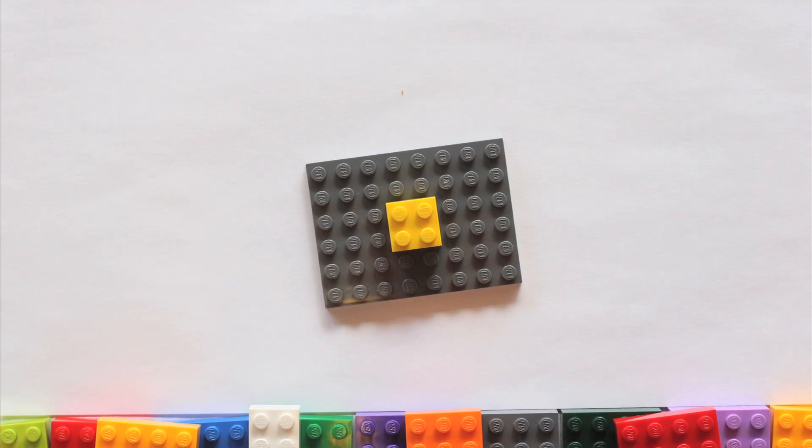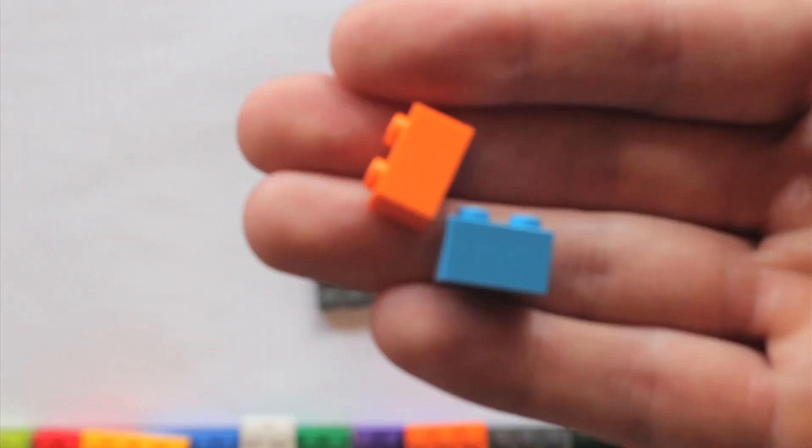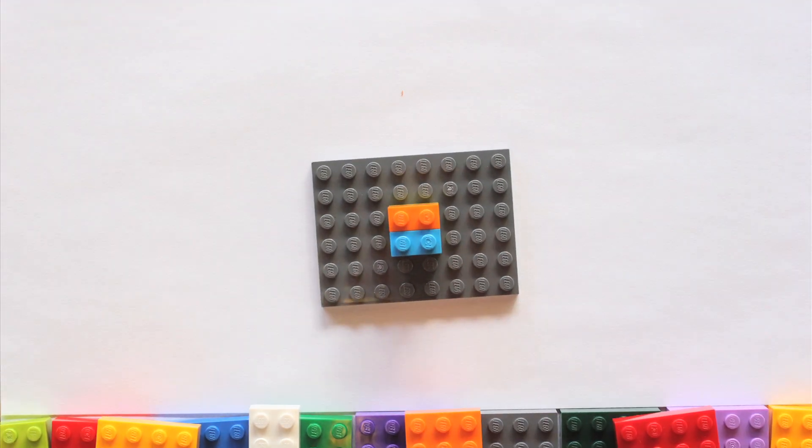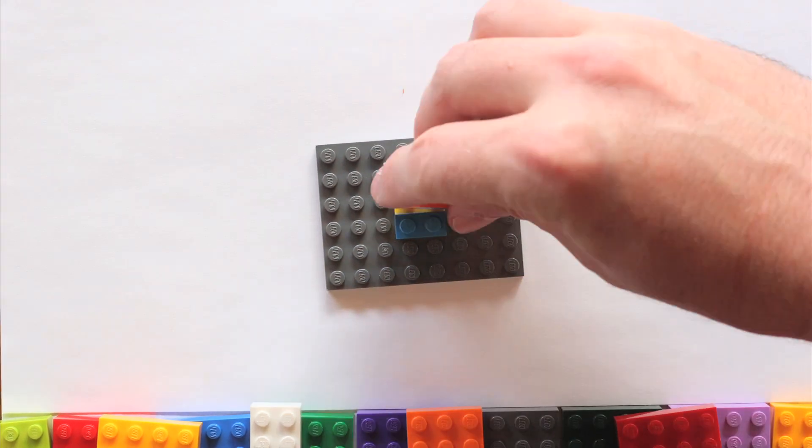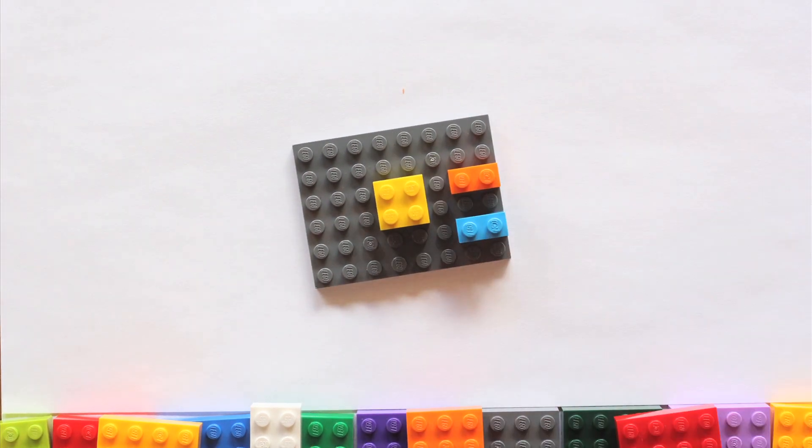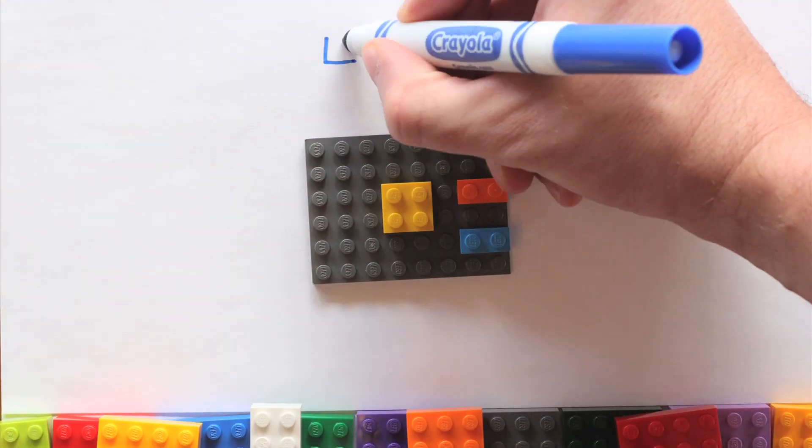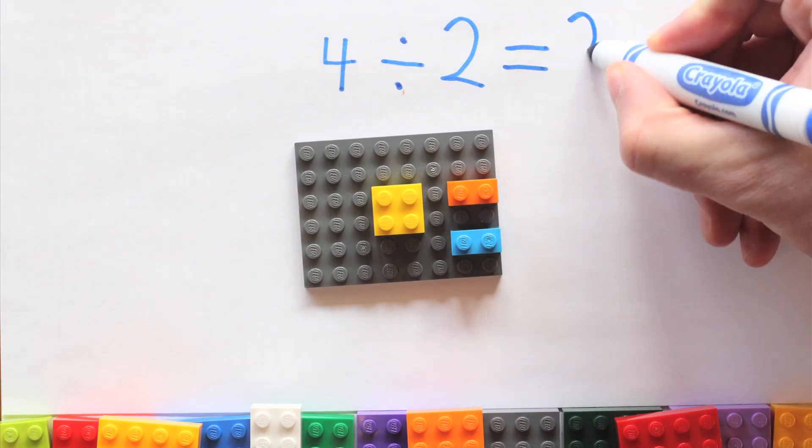Begin by placing a 2x2 brick on a base plate. Ask students to find two bricks that can be placed on top of the studs and cover them completely. Explain that this model shows that four can be divided into two sets, and each set has two studs. Demonstrate how to write a division sentence for this model.